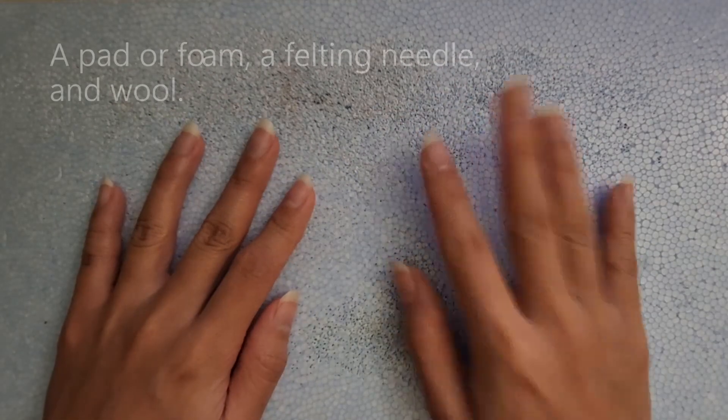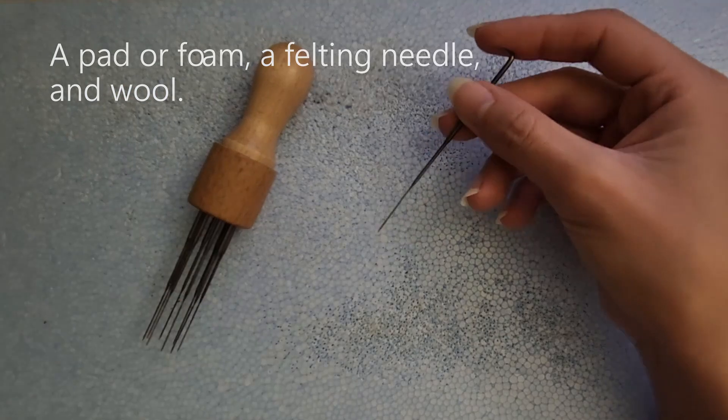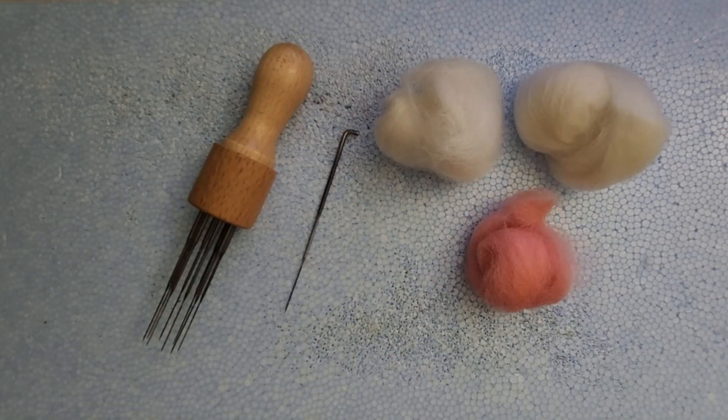For the materials, you will need a pad or foam, a felting needle, you just need one, and some wool. The colors of the wool that you will need are up to you, but I will be using white for cat's paw and pink for the toe beans.